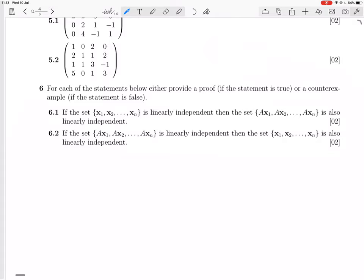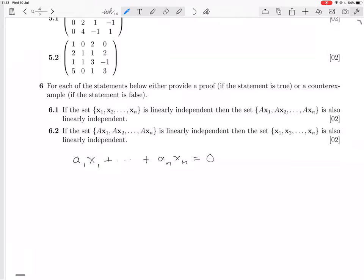So how would you prove that x1 to xn is linearly independent? We want to assume that ax1 to axn is linearly independent, and we're going to prove that x1 to xn is linearly independent. To prove x1 to xn is linearly independent, you take a linear combination of it, set it equal to zero, and you try and show that all the scalars are zero.